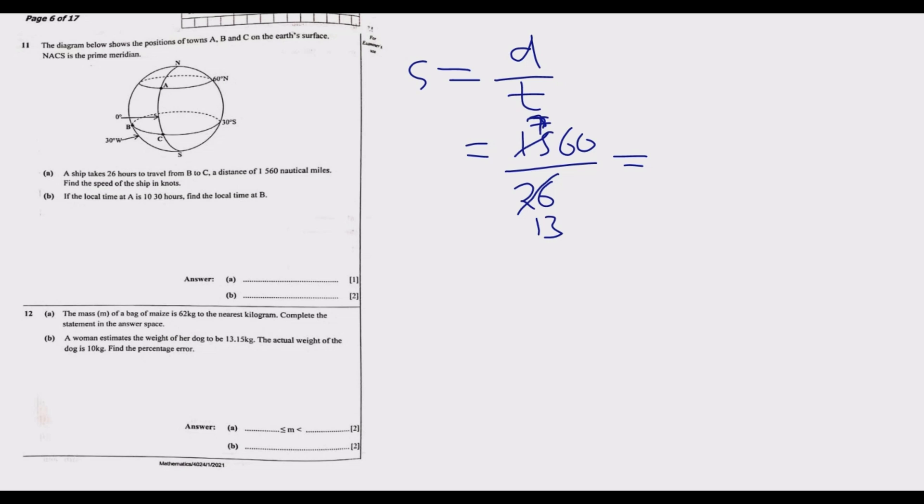Then 13 into 78. So 13 multiplied by 5 is 65, 65 plus 13 is 78. So we have 6 multiplied by this 10, so we have 60. We have 60 knots as our answer. This is how quickly you can get this for one mark. So let us go to question b.